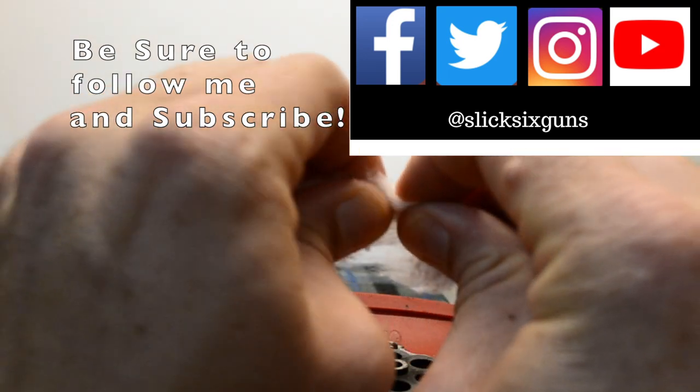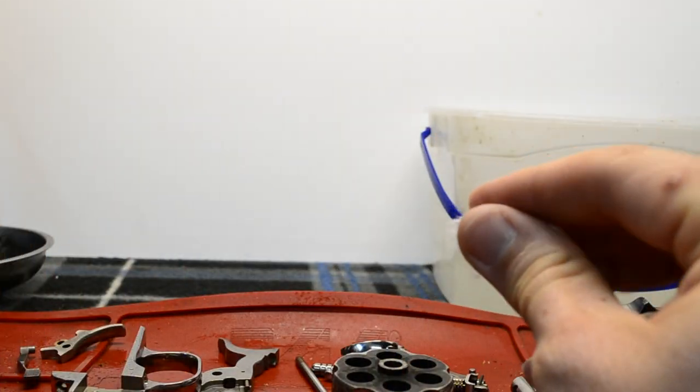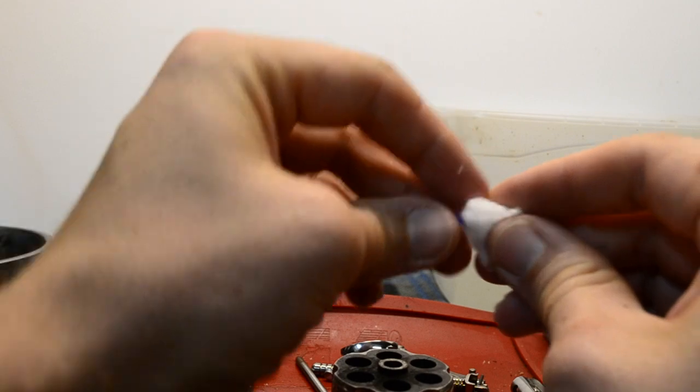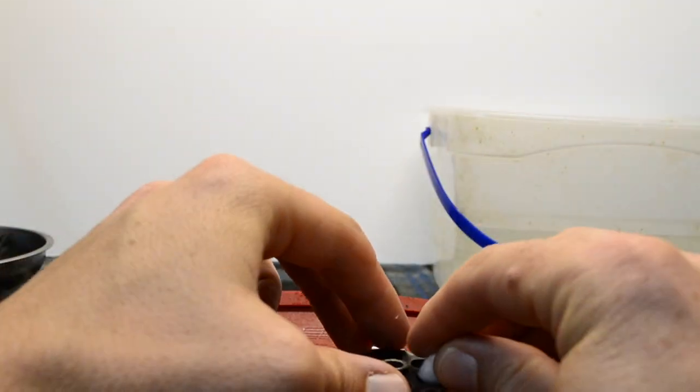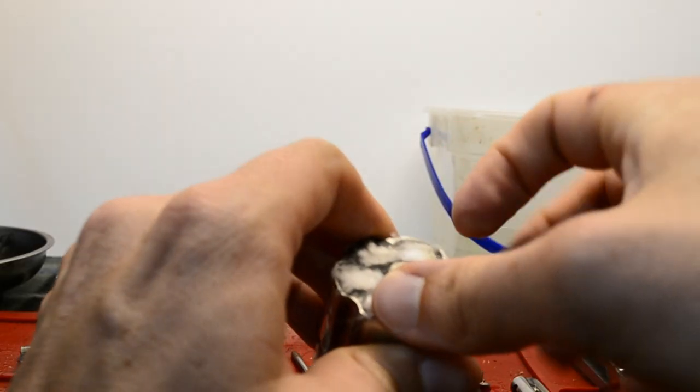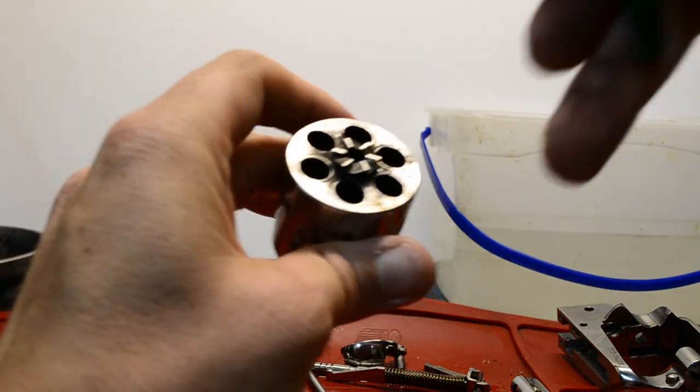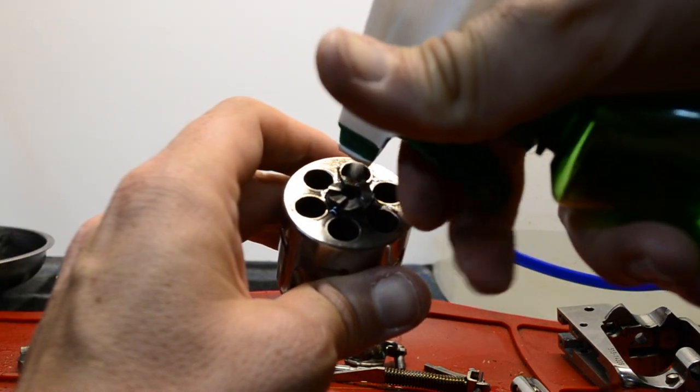Take another cotton ball and break it into six smaller pieces big enough to seal the chambers of the cylinder. Place the cotton ball pieces in either end of the cylinder and spray Simple Green into each chamber until it is saturated.